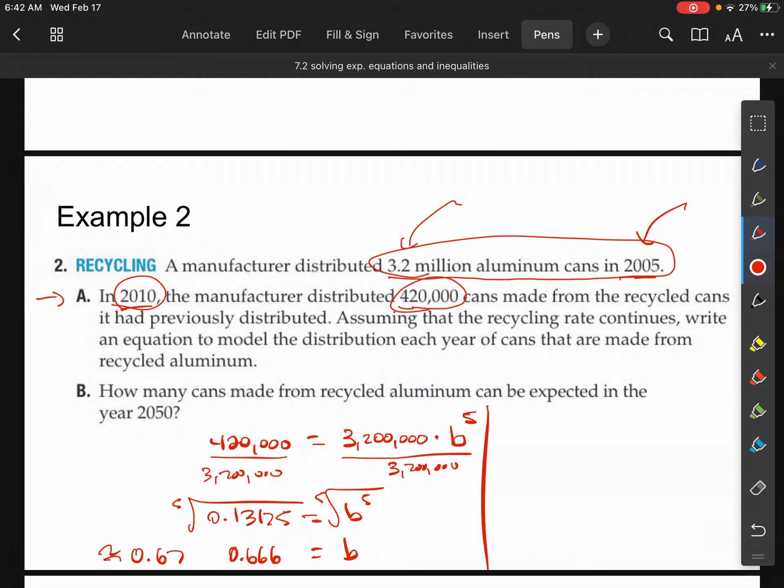And then here to get B by itself, I'm going to take the fifth root of both sides. Take the fifth root of both sides, and we get B is equal to 0.666, and then it keeps going. We're just going to round it to approximately 0.67. Now, once you find B, we're just going to plug that B back into the equation. So we're going to say Y then is equal to 3.2 millions times 0.67. So this is A, original amount. This is the common ratio that we just found. So this was how to find the common ratio.